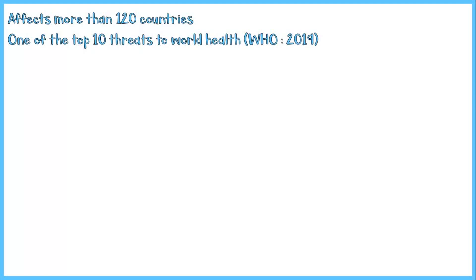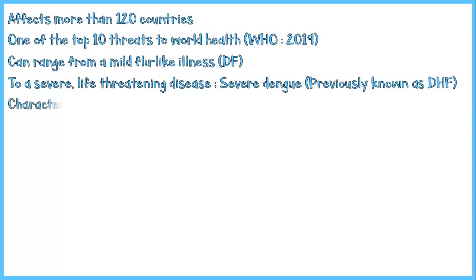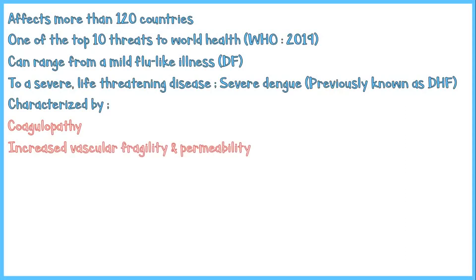The disease spectrum can range from a mild flu-like illness, which is usually seen in classic dengue fever, to a severe, life-threatening disease called severe dengue — previously known as dengue hemorrhagic fever — characterized by coagulopathy, increased vascular fragility and permeability. If not closely monitored and managed, hemorrhagic fever is more likely to progress into a state of hypovolemic shock, known as dengue shock syndrome or DSS.